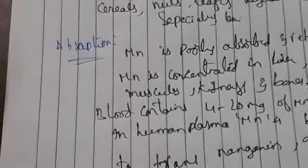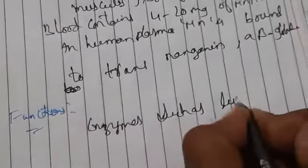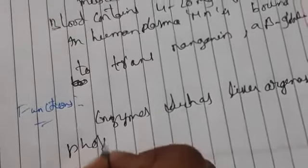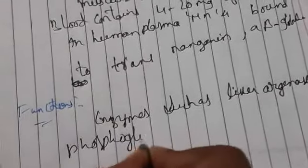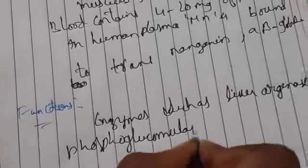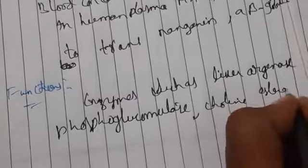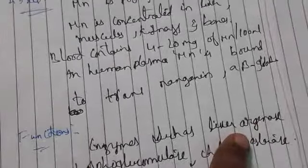Manganese activates a number of enzymes such as liver arginase, phosphoglucomutase, cholinesterase, and mitochondrial respiratory enzymes. Arginase is mainly used for the urea cycle.